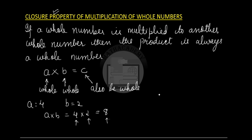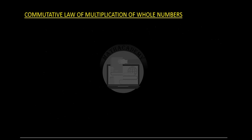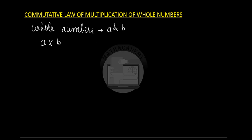Let us look at the next property — the commutative law of multiplication of whole numbers. The commutative law of multiplication says that if we have two whole numbers a and b, then a multiplied by b is the same as b times a.